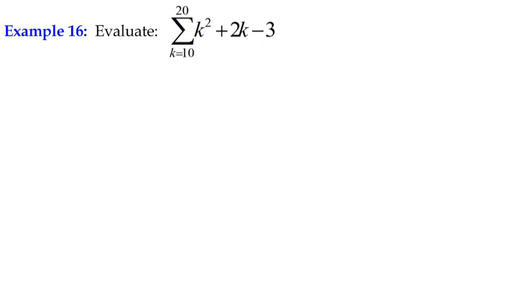So this one's slightly different because we're actually starting our series when k is 10. Now, all of the formulae require k to be 1 or the first term to be 1. So when we're saying that sigma k up to n is n times n plus 1 over 2, it's really important that we're starting from 1.